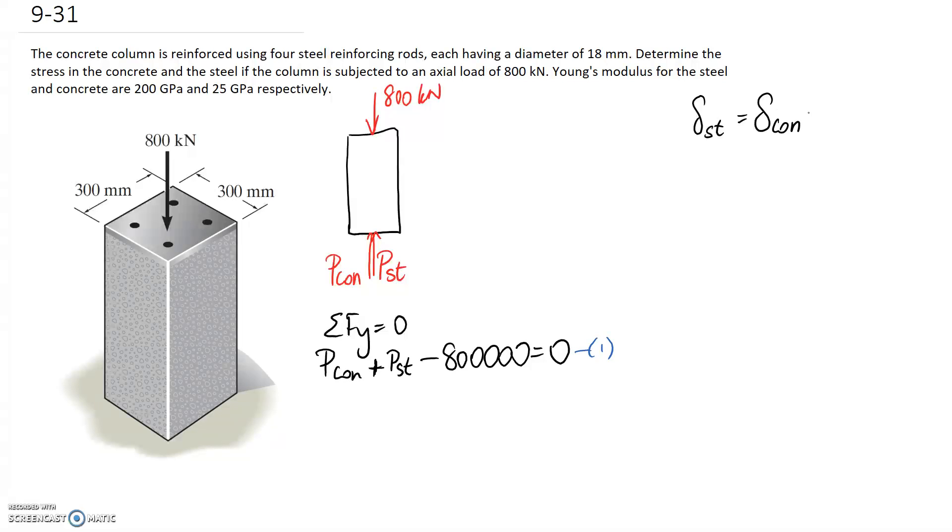So we can replace this with the form that's PL over AE for our axial deformation, and same thing for the concrete. So what we end up with is this P here is the P for steel, which is what's in this equation, and this P here is the P for concrete, which is also what's in this equation. So provided we know everything else that sits in here, which we should, we're going to be able to solve these two equations simultaneously.